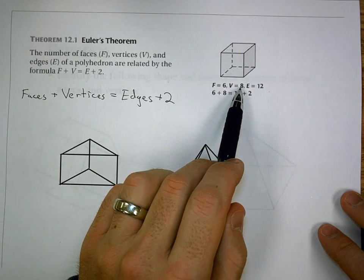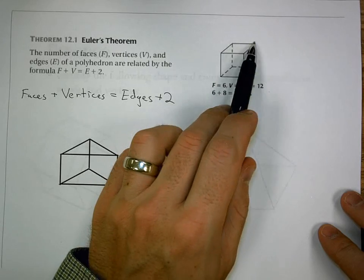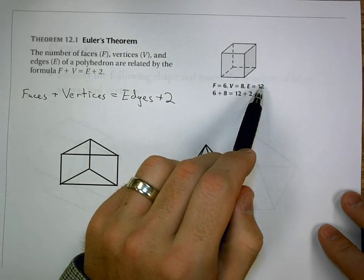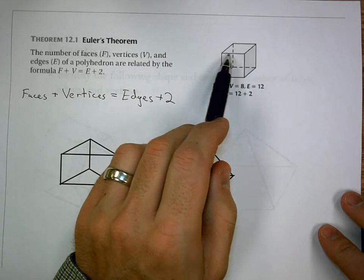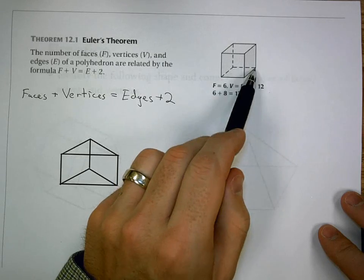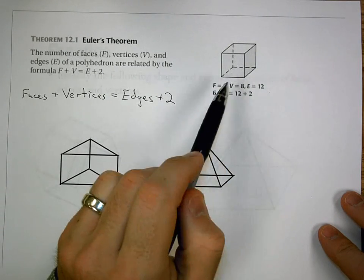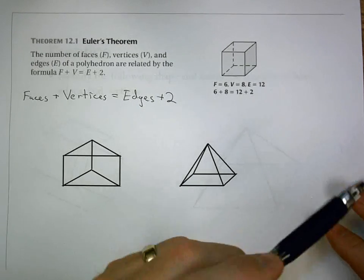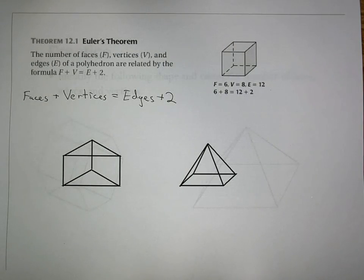Vertices, eight, that's the corners, one, two, three, four, five, six, seven, eight. Okay? And, edges are the lines you draw. If we look at the top, we have four there. The bottom, we have four there. And, we have four connecting. That gives us 12. So, six plus eight equals 12 plus two. Fourteen equals fourteen. That is a true statement. We know the relationship is true.